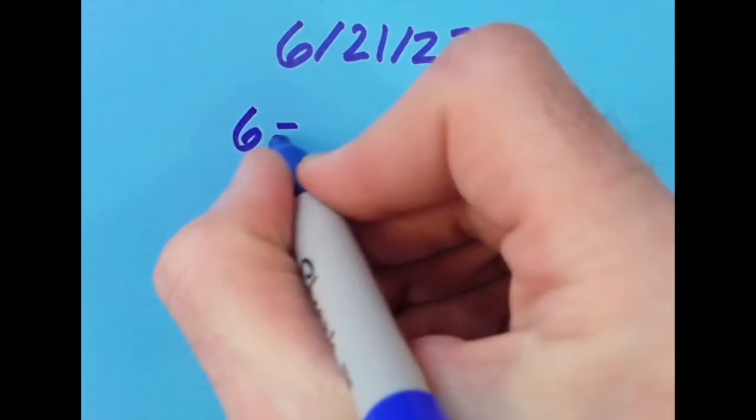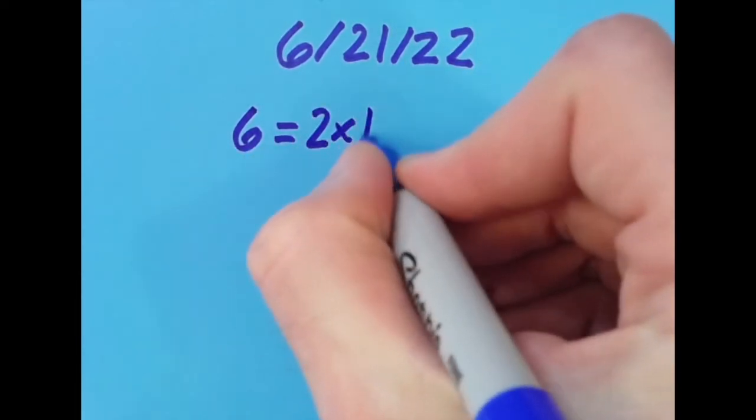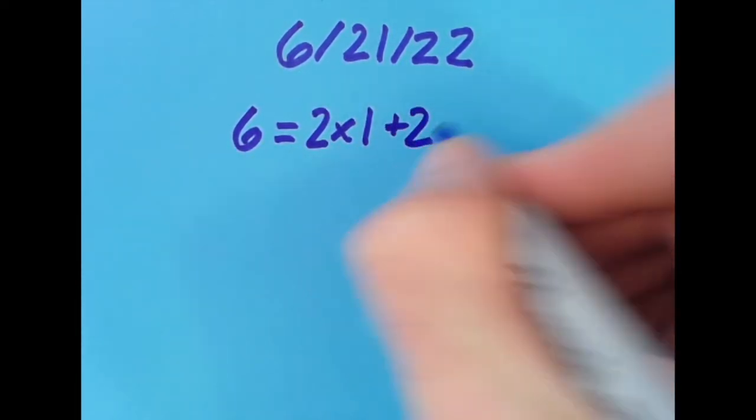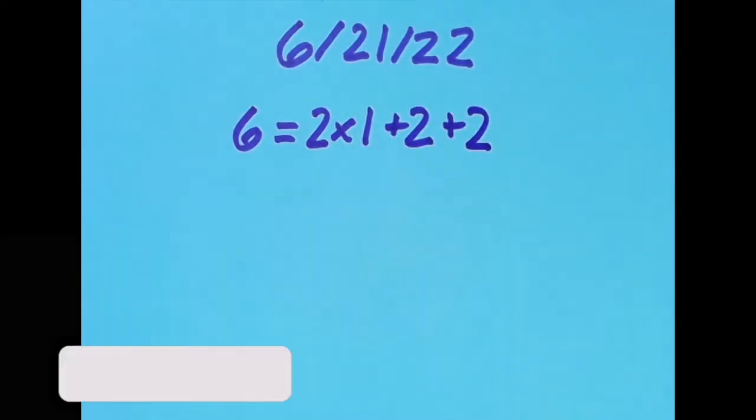So what I came up with is that 6 equals 2 times 1 which is 2, plus 2 which is 4, plus 2 more gives us 6.